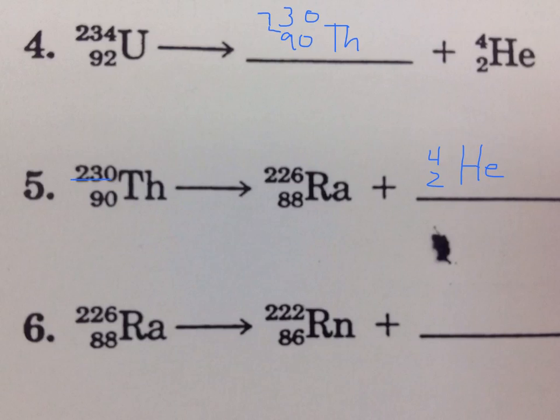Now let's take that Ra 226-88, and that's going to give us Rn 222. We would need to add 4 to that. We look at the 88, and then we have 86 on the right side, so we would need 2. We look up the 2 on the periodic table. We have an alpha particle released.